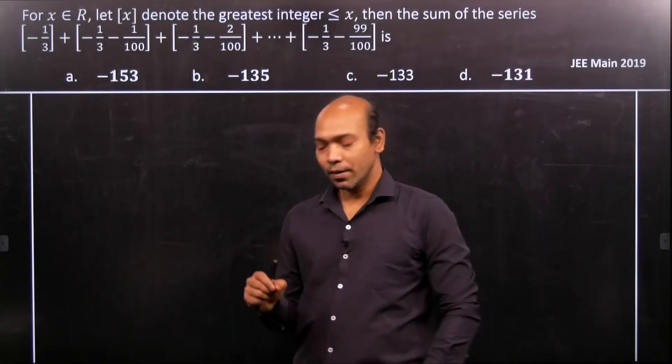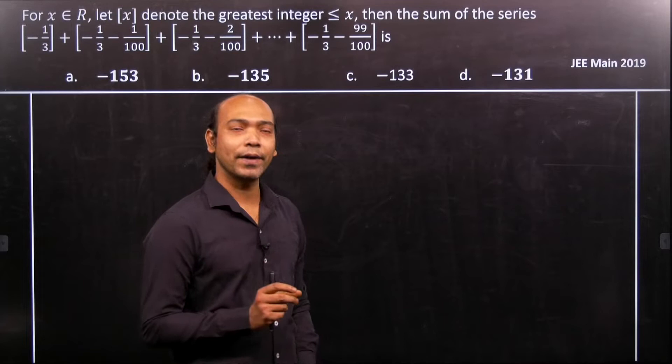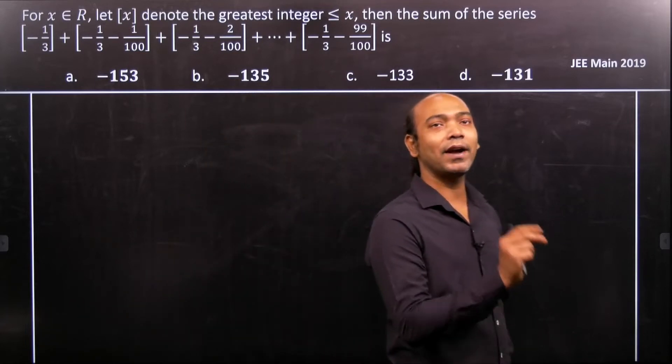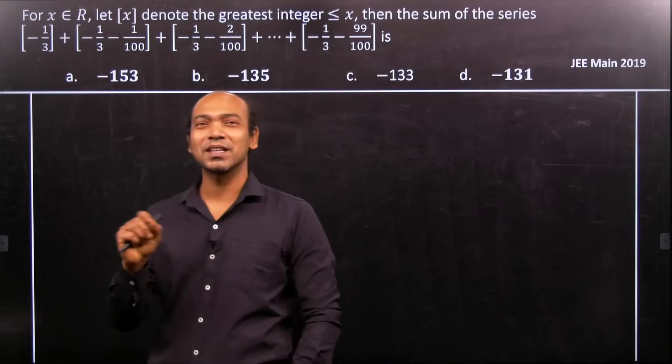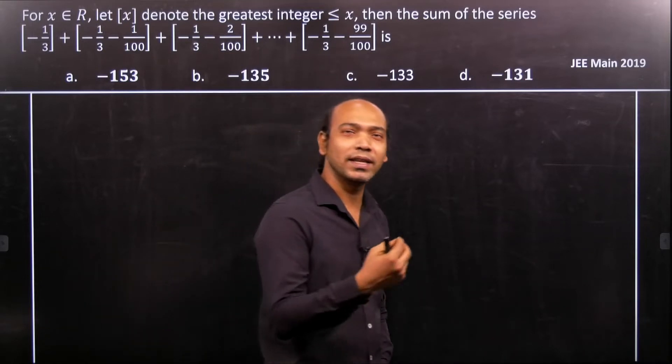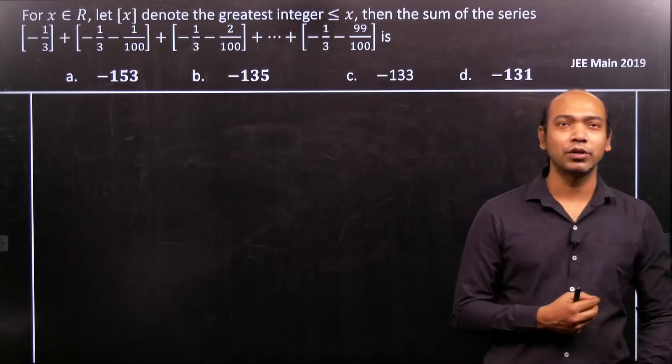Hi all, see this. This is a problem regarding the sum of a series, a finite series, but it has all the terms with the box product number, the box thing, or the greatest integer function.